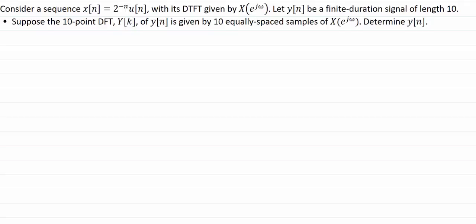Let's look at this problem that involves DTFT and DFT. We are given a sequence X(N) equals 2 to the minus N times U(N), and we are told there is another sequence Y(N) which has a finite duration of length 10. The 10-point DFT of Y(N) is given by 10 equally spaced samples of the DTFT of X(N). Using this information, we need to find Y(N).